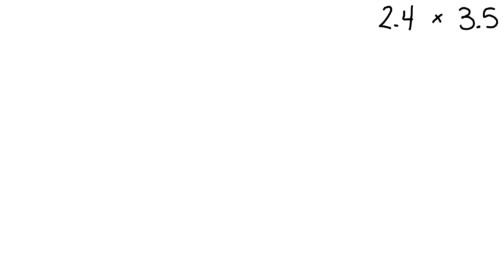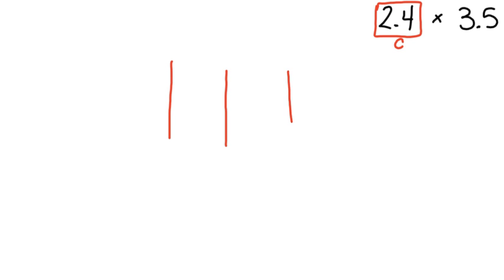First I need to look and see how many digits are in each number. My first number has two digits, so I am going to make that my columns — I only need two columns, one for each digit in the number. I am going to break that number apart in expanded notation, so 2 and 4 tenths represents two wholes and 4 tenths.